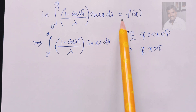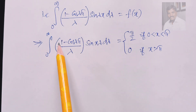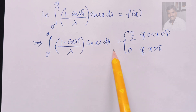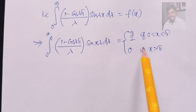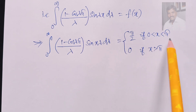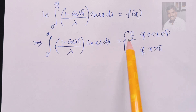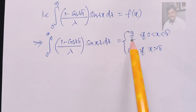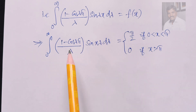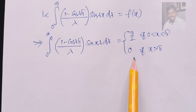So the integral from 0 to infinity of (1 − cos(λπ))/λ times sin(λx) dλ equals f(x), which is exactly what we assumed at the beginning: f(x) equals π/2 for 0 < x < π, and 0 for x > π. Thus the result is proved. I hope you understand, thank you.